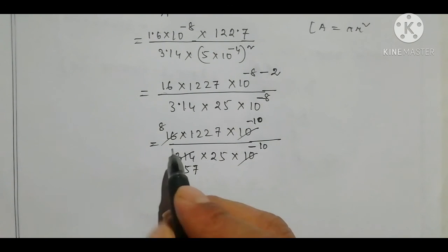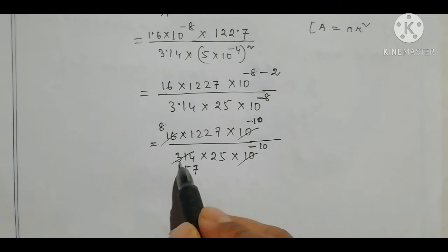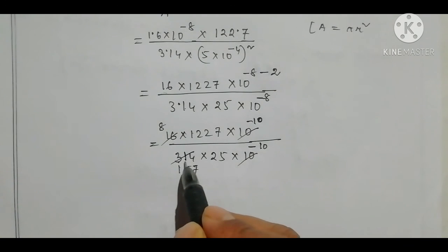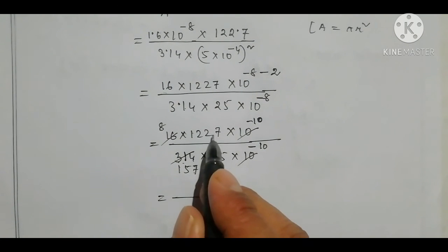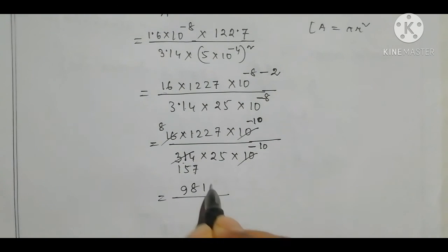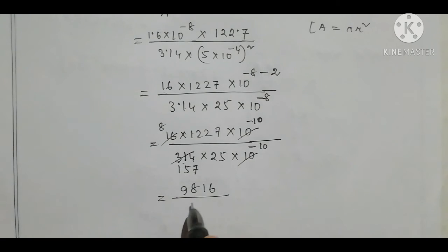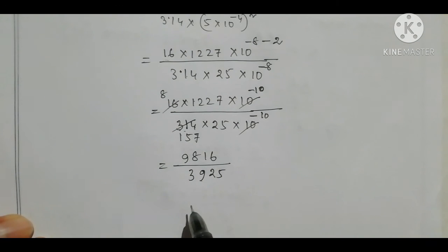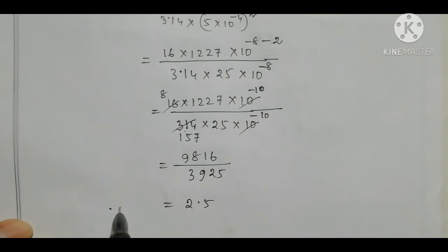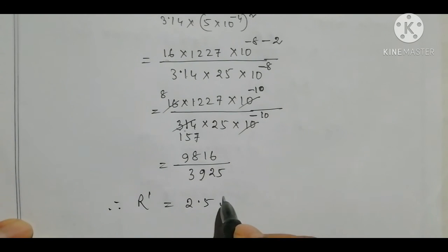So 157 — 286 but 2, 1530, so 16. So 8. 1227 multiply 9816, 157 times 25 multiply gives 3925. We have to add 9860 and 3925. We have to add 2.5 and 3.5 minus 1 — this is the answer.